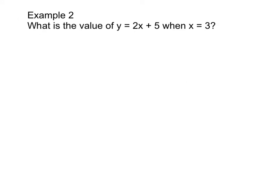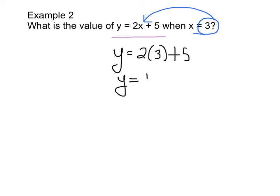Example 2. What is the value of y equals 2x plus 5 when x is 3? This should be review from 6th or 7th grade. We take our equation, y equals 2x plus 5. We take the value of 3 and substitute it in for x. So y equals 2 times 3 plus 5. That gives us y equals 6 plus 5, which is 11. When x is 3, y is 11.